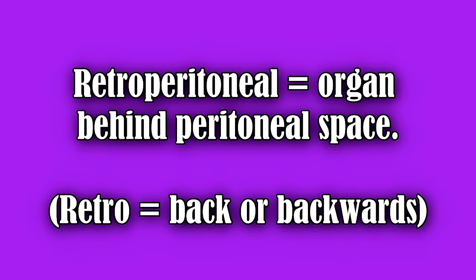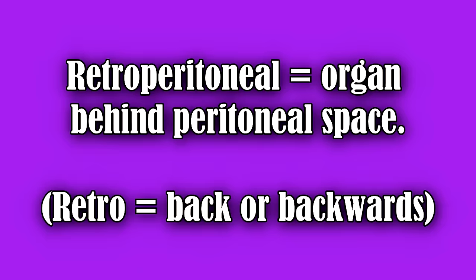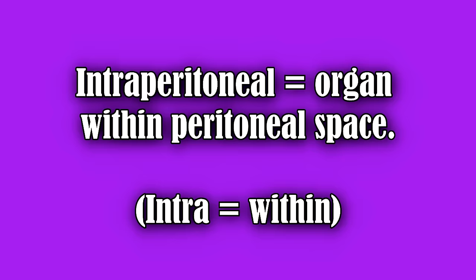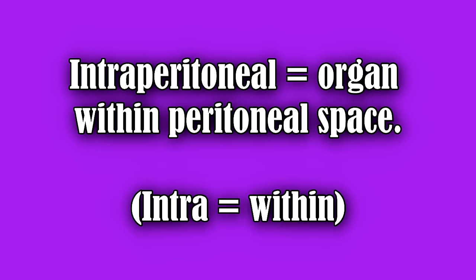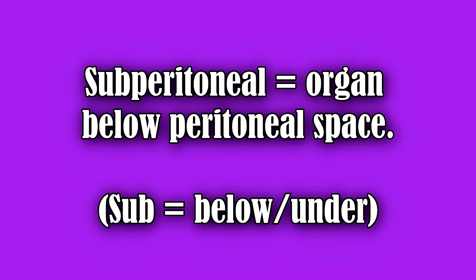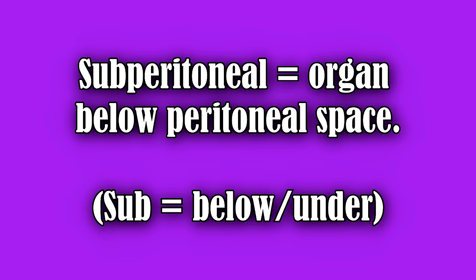When talking about the peritoneum, there are additional directional terms used because it doesn't include all organs in the region. If an organ is behind the peritoneal space it is retroperitoneal — retro means back or backwards. If it's within the peritoneal space it is intraperitoneal — intra means within. And if it's below the peritoneal space it's subperitoneal — sub means below or under.